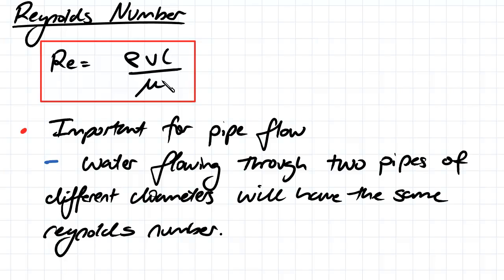It's mainly important for pipe flow, that's when we use Reynolds number the most.